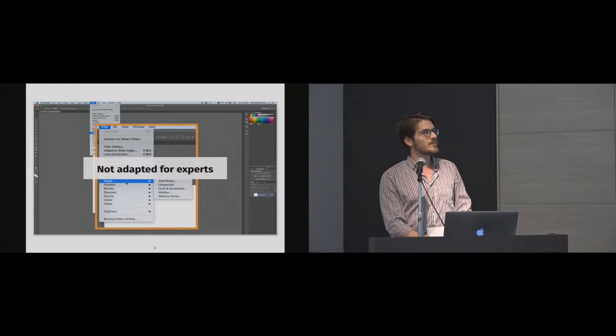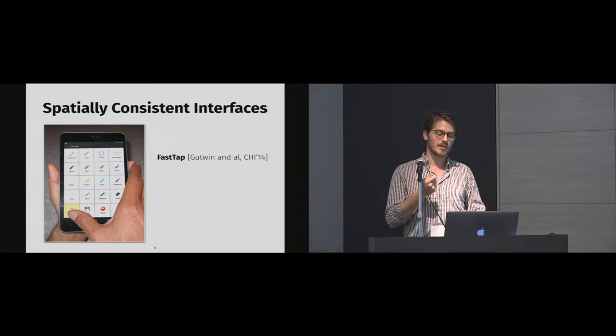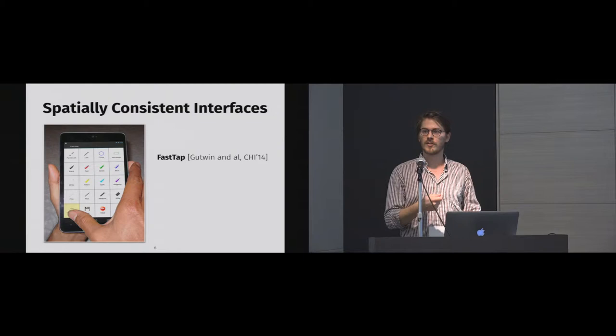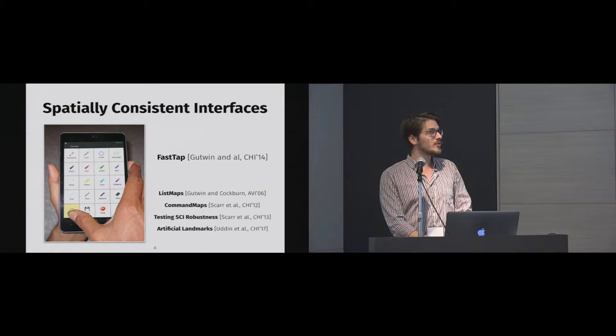An approach used in the literature is spatially consistent interfaces. Here I'm showing the project called FastApp. The idea is that commands are displayed in a grid, and each command is placed at a fixed position on the interface and won't change over time. The user can select commands and will implicitly learn their positions through rehearsal, eventually knowing commands implicitly using spatial memory skills. This has been shown to be efficient for command selection.